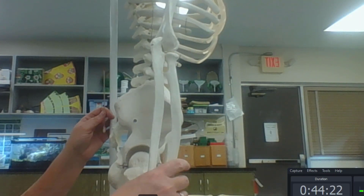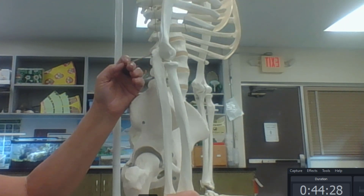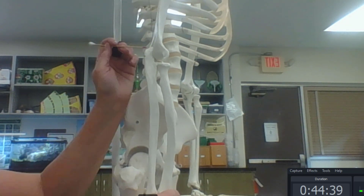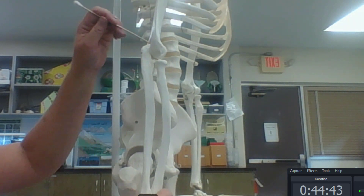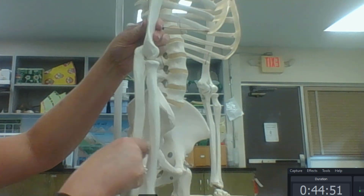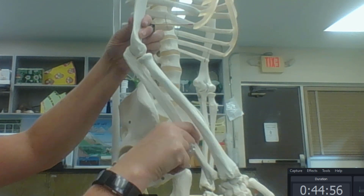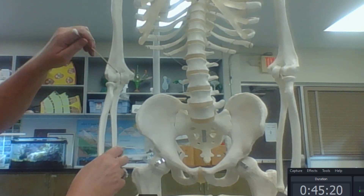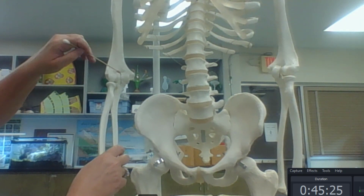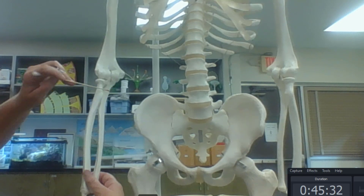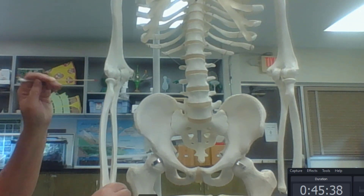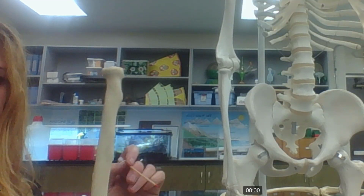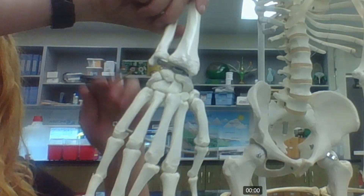Looking at the articulated elbow on the skeleton: the olecranon process of the ulna fits into the olecranon fossa of the humerus; the trochlear notch rocks on the trochlea; and the coronoid process fits into the coronoid fossa as the elbow bends. The radius has a radial tuberosity — a small bump — and its distal end articulates with the carpals, metacarpals, and phalanges.